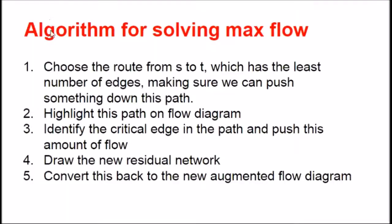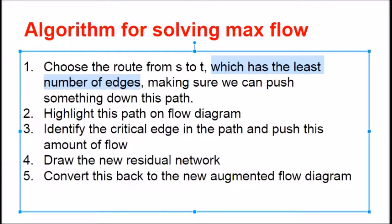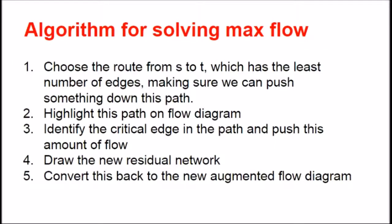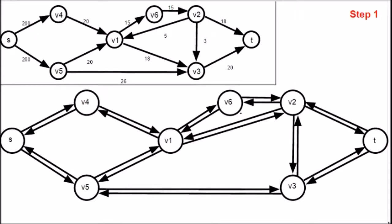The algorithm that we are going to use for solving the max flow is this one. First, we need to choose the route from the source to the sink which has the least number of edges, making sure we can push something down this path. We choose the path that has the least number of edges because this way we will eliminate a critical edge from the network on every step we take. This improves the time complexity relative to the method used before when we picked a random path from the source to the sink. The second step is to highlight the path on the flow diagram. The third step is to identify the critical edge in this path and push that amount of flow through the network. We will then draw the new residual network and then convert that residual network back to an augmented flow diagram. We will repeat these steps until there is no other route from S to T.